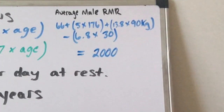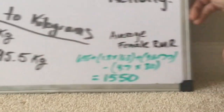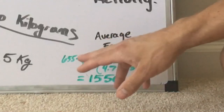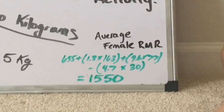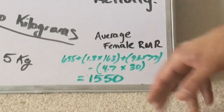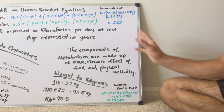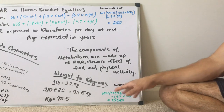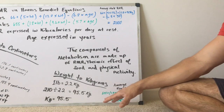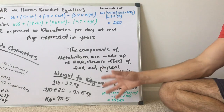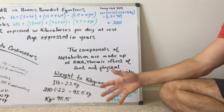So at rest, if you're doing nothing and you're a guy, most likely you're burning around 2,000 calories. For females, we have 655 plus 1.8 times 163, plus 9.6 times 77, minus 4.7 times 30 for age, which gives you 1,550. Now these are estimates. So females are about 1,500 calories and males are about 2,000 calories at rest per day.